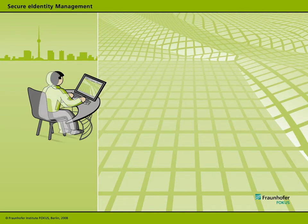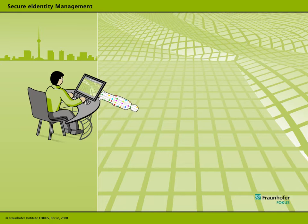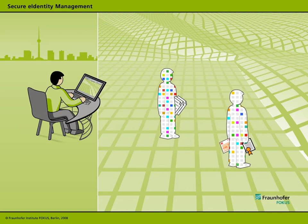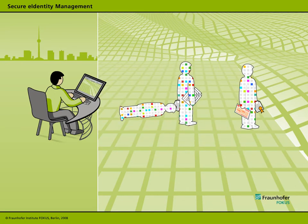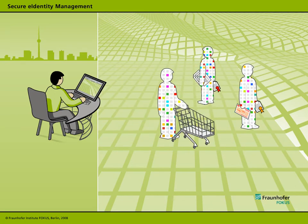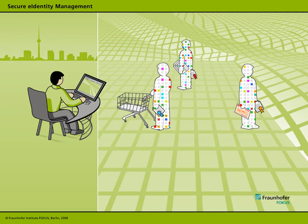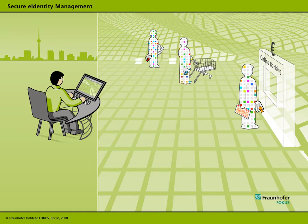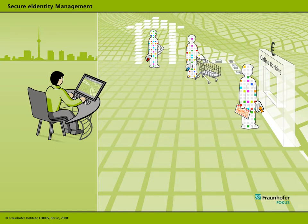In a digital world, we need our identity credentials — as a bank customer opening an electronic bank account, as a citizen using online citizen services, or as a customer buying something on the Internet. But what we don't need is to make every pixel of our ID information generally available. Each provider should get just what he needs, and nothing more.